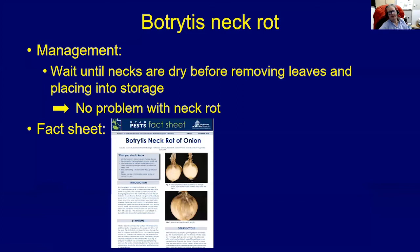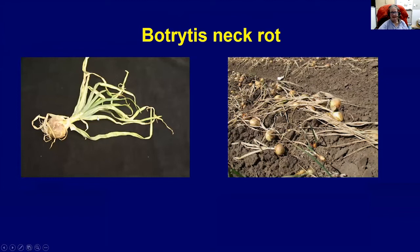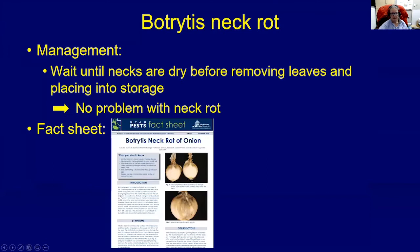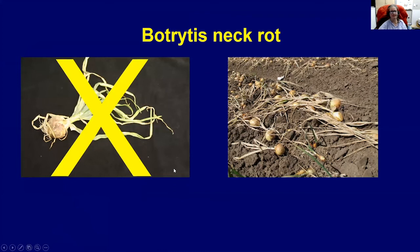To manage Botrytis neck rot, it's very easy to control but you have to be patient. You need to wait until the necks are dry before you remove the leaves and place the onions into storage. If you have an onion that's still green and you top it immediately after undercutting, you will get Botrytis neck rot. You want to wait until the leaves are dry, dead, and the area around the neck has dried up as well before placing onions in storage. In most years when we see a big problem, it's when there's an early frost predicted and growers harvest quickly without waiting until the onions have dried down enough.